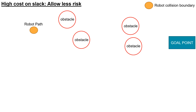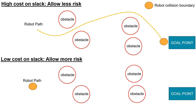Because slack is a control variable, we can control how much we allow the boundaries to collide by placing a high or low cost on slack. A high cost causes the solver to find solutions where collision boundaries almost never overlap. A low cost allows more risky behavior, increasing the chance of collisions. An interesting avenue for future study is to relate the cost on slack with a numerical probability of collision, potentially using machine learning, achieving similar functionality to chance constraints but without their computational burden.